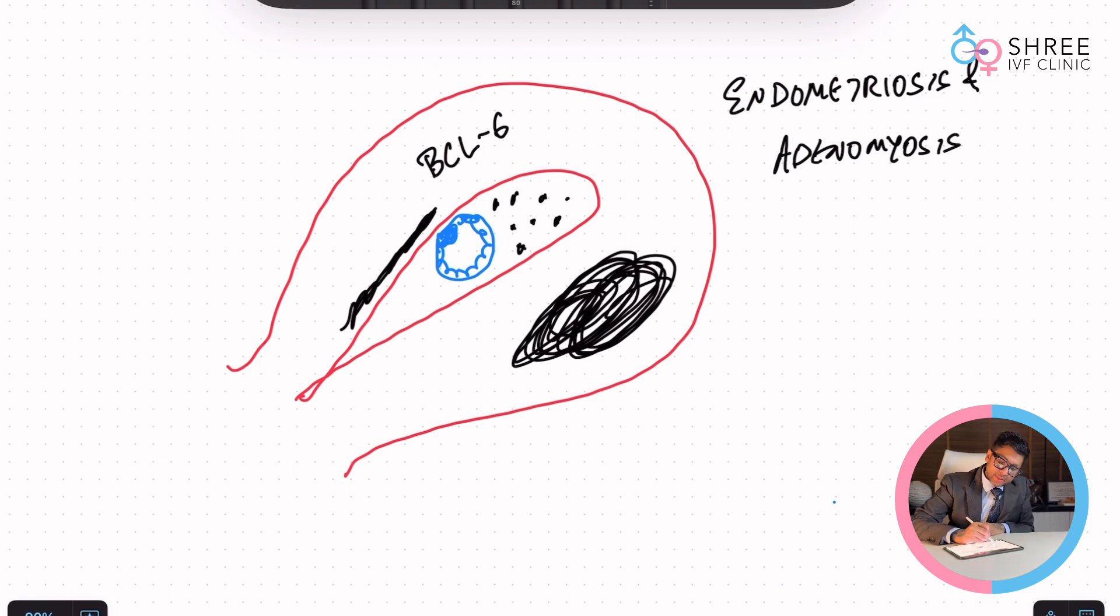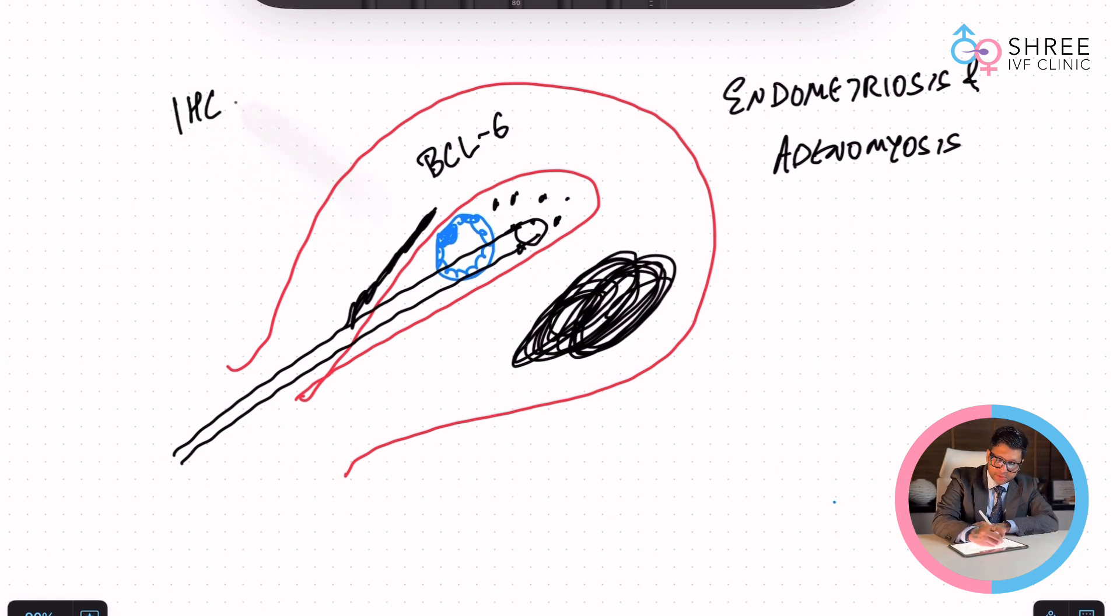When you do a BCL-6 testing through an endometrial biopsy, that means you pass a small pipette, you take a biopsy, and you do it on a great automated platform with immunohistochemistry, that is IHC for BCL-6, you will get something beautiful which is called an H score.